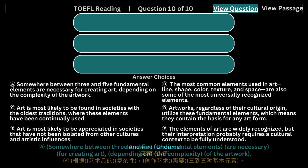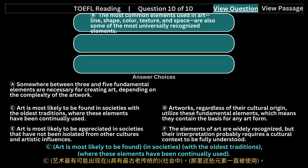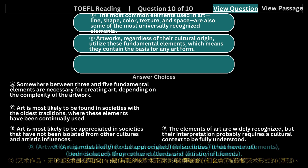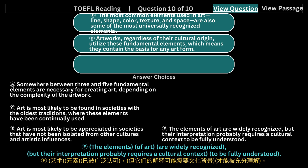Answer Choices: A. Somewhere between three and five fundamental elements are necessary for creating art, depending on the complexity of the artwork. B. The most common elements used in art — line, shape, color, texture, and space — are also some of the most universally recognized elements. C. Art is most likely to be found in societies with the oldest traditions, where these elements have been continually used. D. Artworks, regardless of their cultural origin, utilize these fundamental elements, which means they contain the basis for any art form. E. Art is most likely to be appreciated in societies that have not been isolated from other cultures and artistic influences. F. The elements of art are widely recognized, but their interpretation probably requires a cultural context to be fully understood.